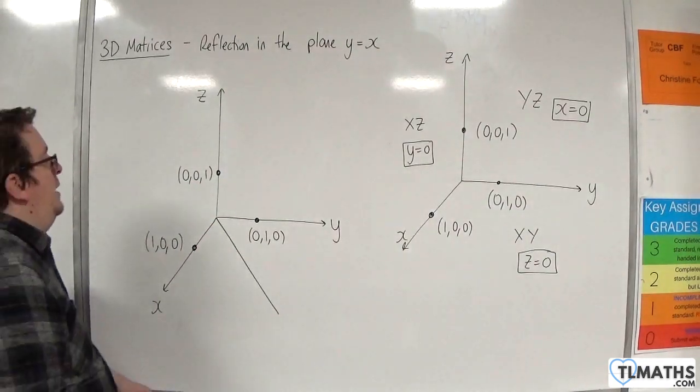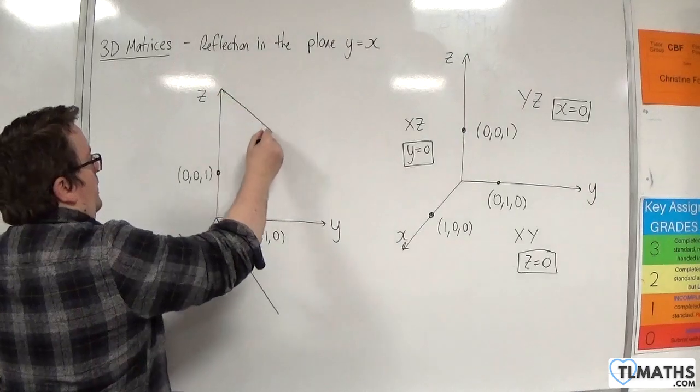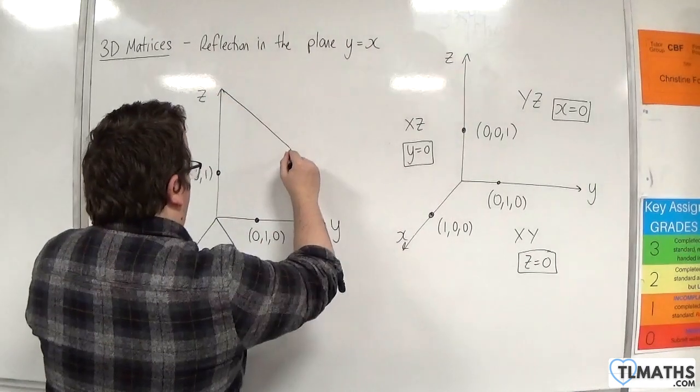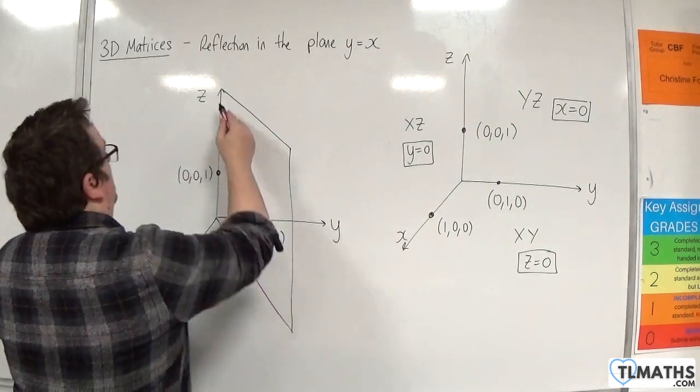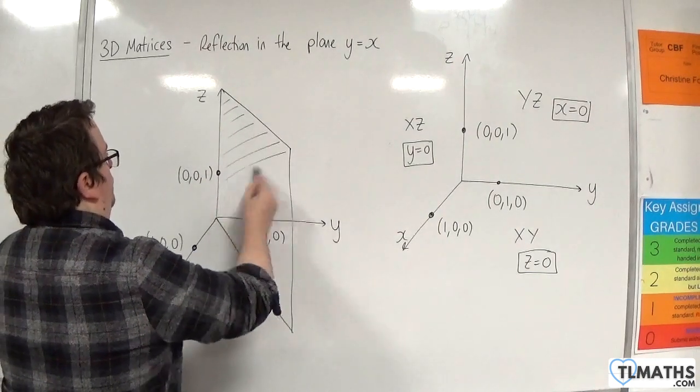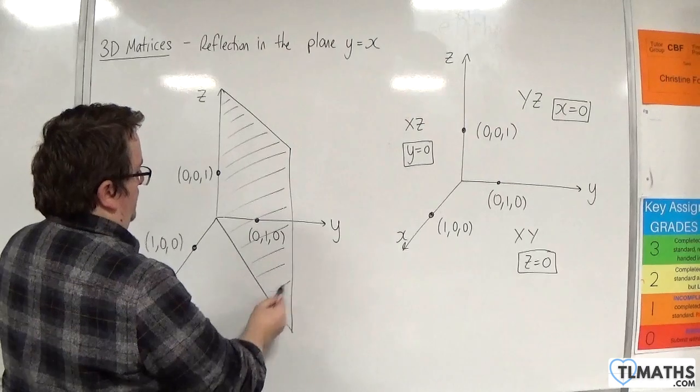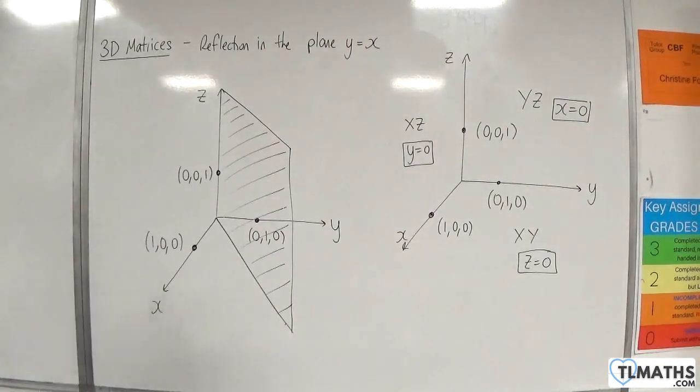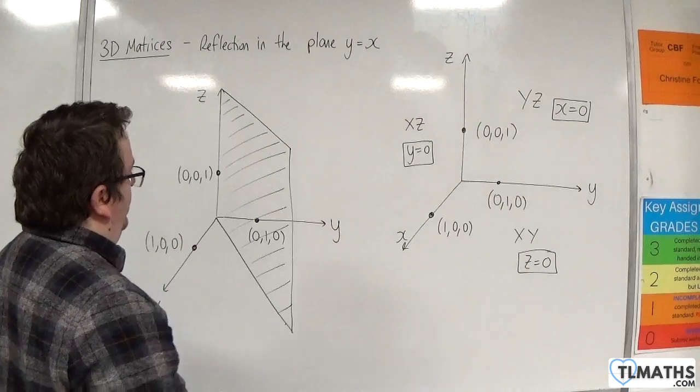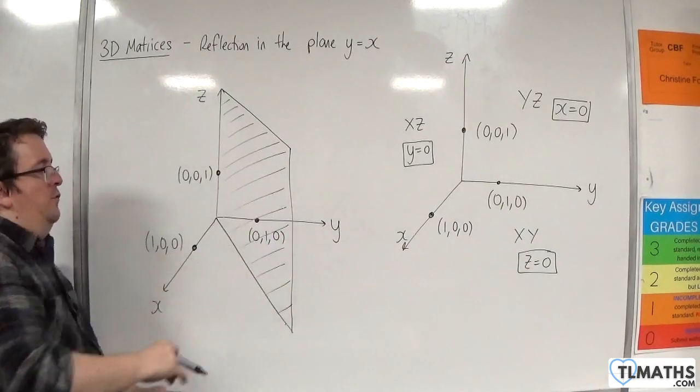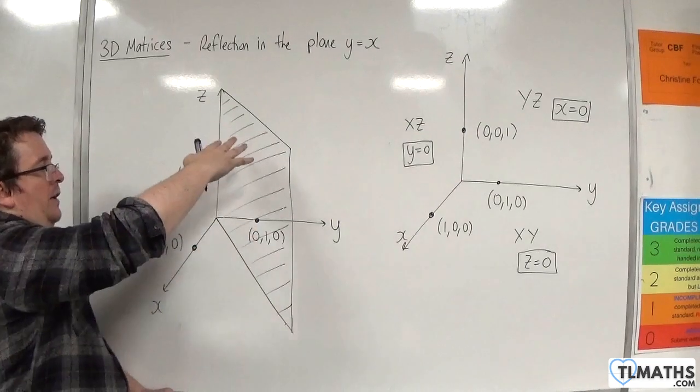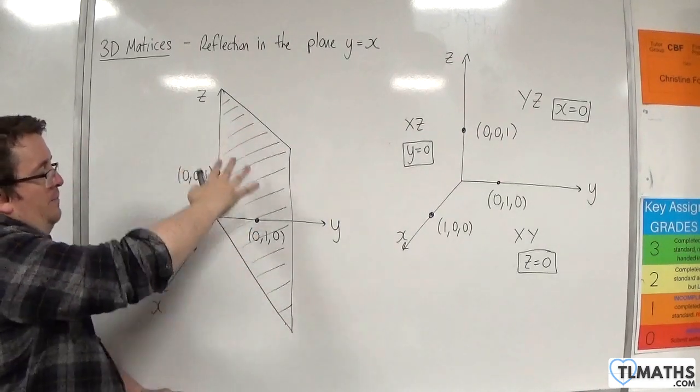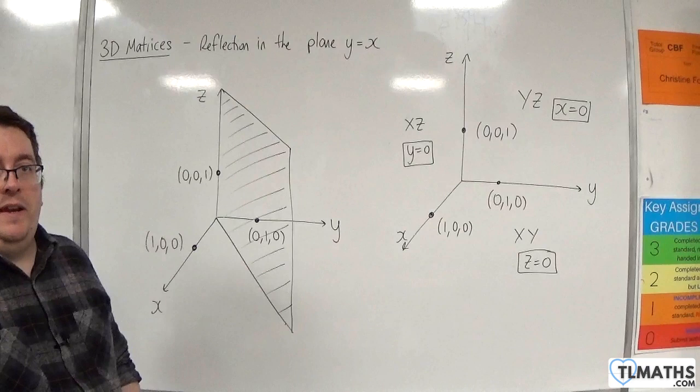So in actual fact it's a plane and it kind of looks like this I guess. It's quite a bit difficult to visualize but it's a whole plane that's coming through. And that's still your line y equals x but this plane is projecting through into the negative z-axis as well.